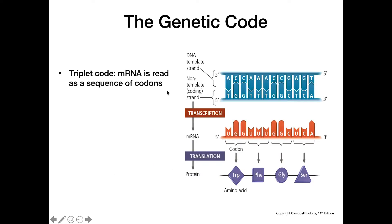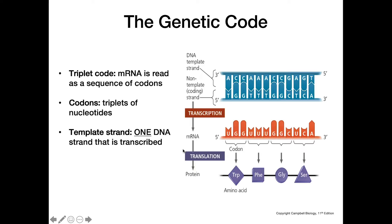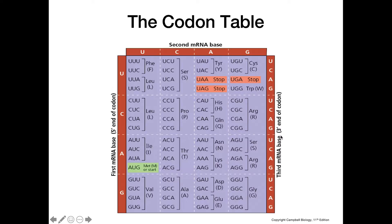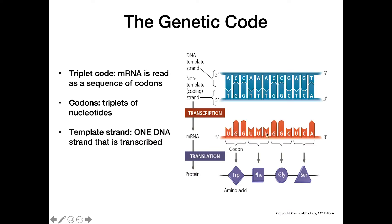The triplet code: mRNA is read as a sequence of codons, where a sequence of three nitrogenous bases makes up a single codon. The template strand is the one DNA strand that gets transcribed — we read the template strand to figure out how to make the mRNA. The sequence of the mRNA is the same as the coding strand, but with thymines replaced by uracils.